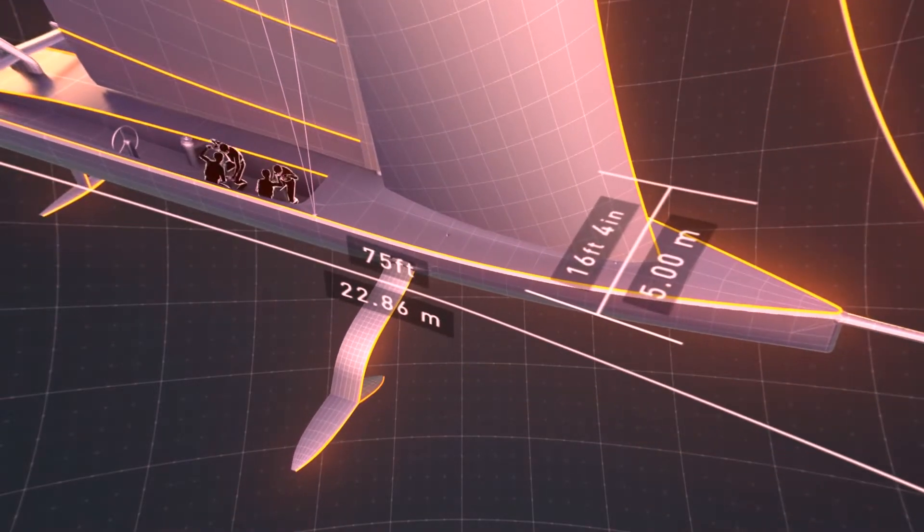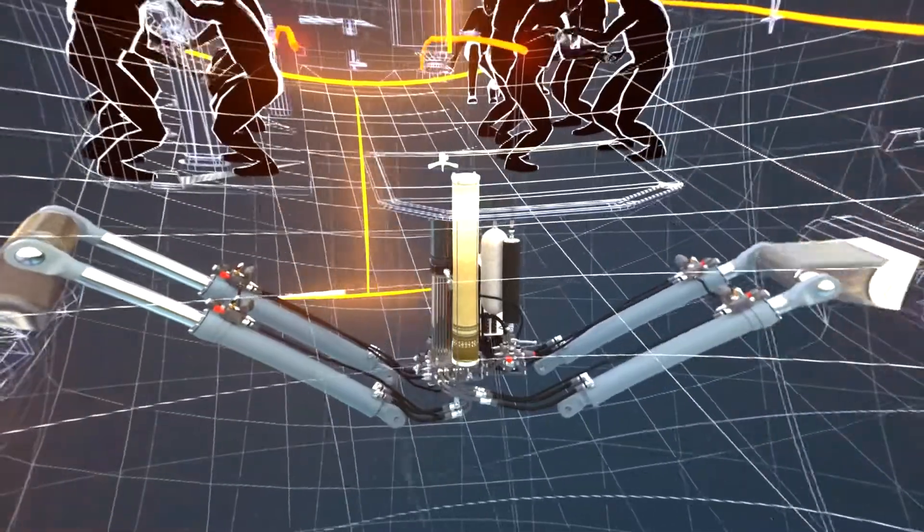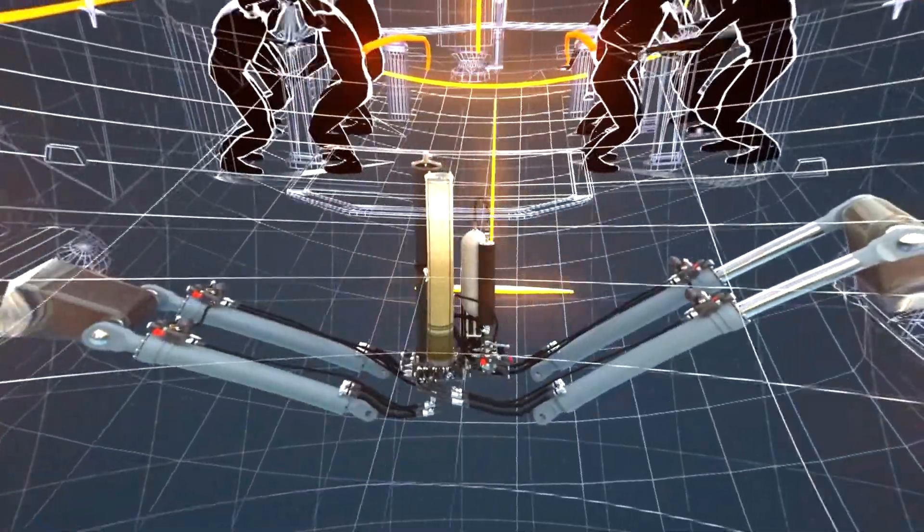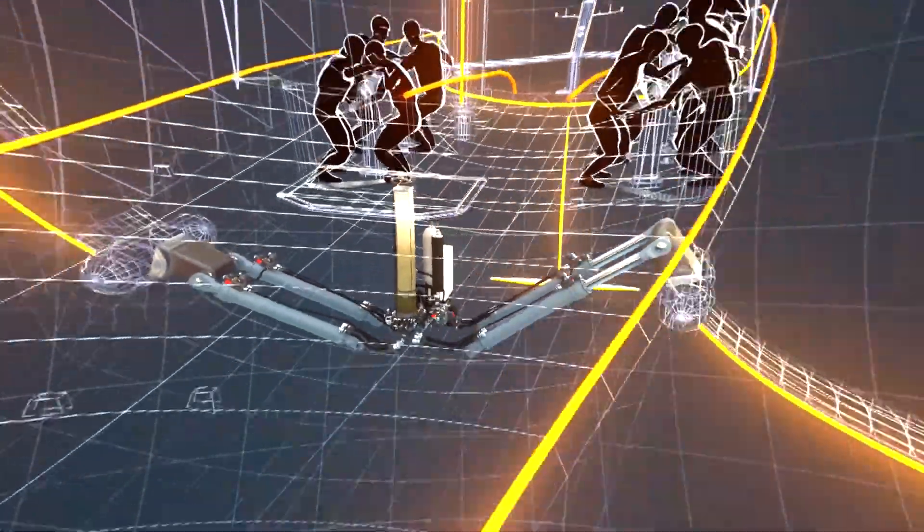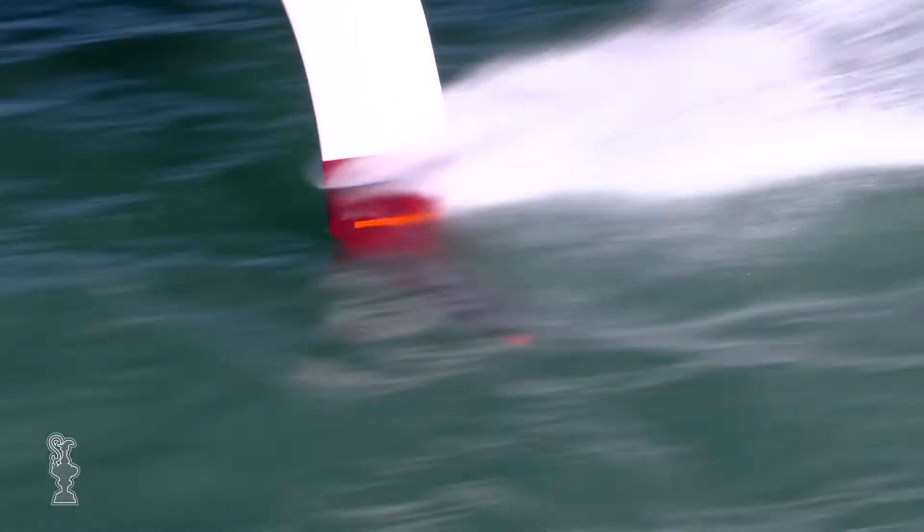On the AC-75, you have twin canting T-foils with a wingspan of 4 meters each. Although the foil cant arms and their hydraulics are supplied to each team as one design component, the foil wings themselves, at the end of each arm, are open for each team to design. So, how does it work?